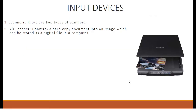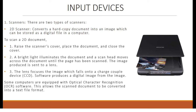Let's start with scanners. There are two types: a 2D scanner, which converts a hard copy document into an image stored as a digital file on a computer in electronic form. To scan a document, raise the scanner's cover, place the document, and close the cover. A bright light illuminates the document and a scan head moves across it until the page has been scanned. The image is sent to a lens, which focuses it onto a charge-coupled device, or CCD. Software then produces a digital image.